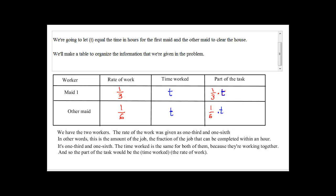So part of house cleaned by the first maid in three hours is t over three. Thus, part of the house cleaned by the other maid in six hours would be t over six. So this whole thing would be equal to entire house cleaned, which is one. So this is the equation that you need to solve for. So I have t over three plus t over six is equal to one.